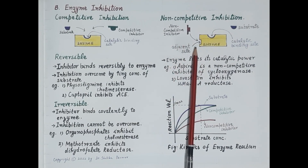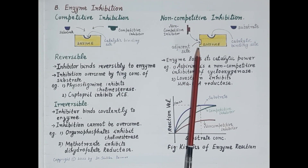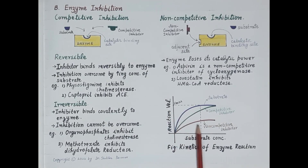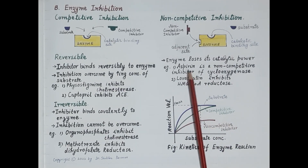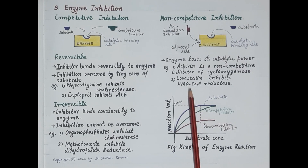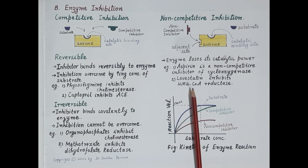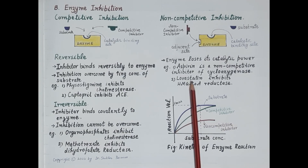In non-competitive inhibition, the inhibitor binds to an adjacent site and not to the catalytic binding site. Binding of the non-competitive inhibitor to this site alters the enzyme so it loses its catalytic property and becomes non-functional. As a result, maximum reaction velocity is never achieved. For example, aspirin is a non-competitive inhibitor of the enzyme cyclooxygenase and is an anti-inflammatory drug. Another example is lovastatin, which inhibits HMG-CoA reductase and is therefore a hypolipidemic drug.